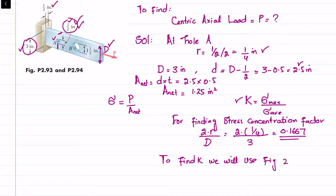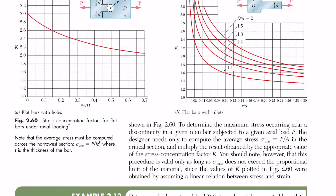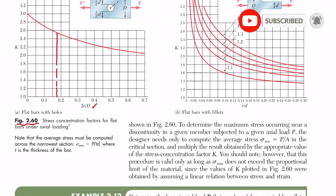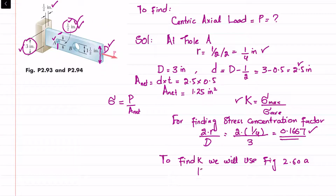Using Figure 2.60a in Mechanics of Materials by Beer & Johnston, we locate 2r/D equal to 0.1667 on the graph. Projecting perpendicular lines, the stress concentration factor K comes out to be approximately 2.56.